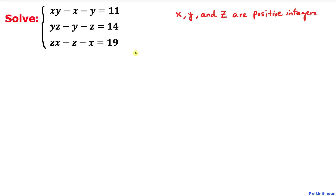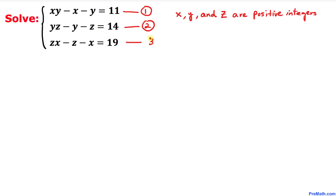Welcome to pre-math. In this video tutorial we have a system of three equations with three variables. The equations are: equation 1: xy minus x minus y equals 11; equation 2: yz minus y minus z equals 14; and equation 3: zx minus z minus x equals 19, where x, y, and z are positive integers. Let's get started with the solution. I'll label these as equation one, equation two, and equation three.